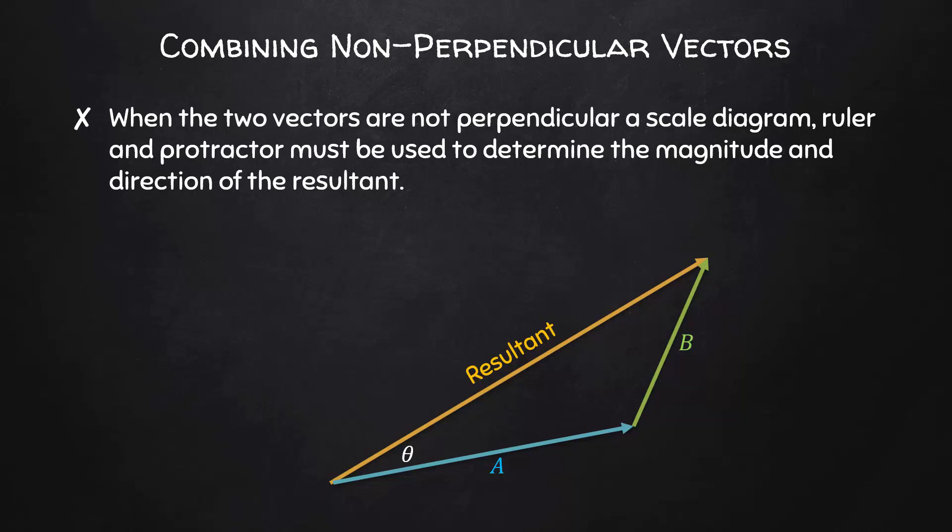When the component vectors are not perpendicular to each other, we need to use a scale diagram, a ruler, and a protractor to determine the magnitude and direction of the resultant.